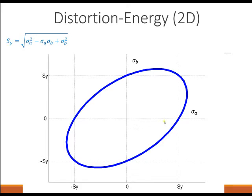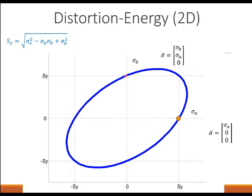If we consider the first point, where sigma A is our greatest principal stress and the other two principal stresses are zero, this is the actual test probably performed to get the data, and we can graph the first point of the ellipse. The next region is when sigma B is a principal stress but is less than sigma A. There's really just a reflection: if I call sigma A, sigma B and sigma B, sigma A, then my graph would just revert around this axis. When sigma B is the only one that exists, sigma A is equal to zero.